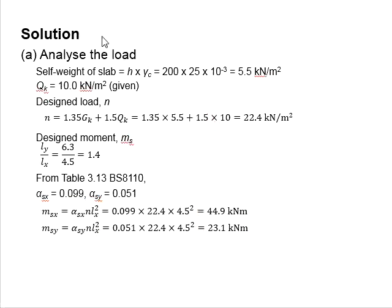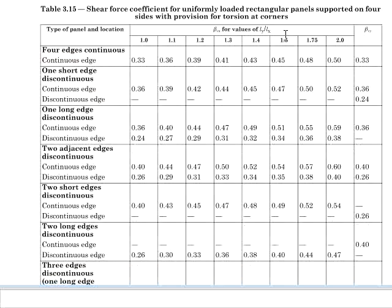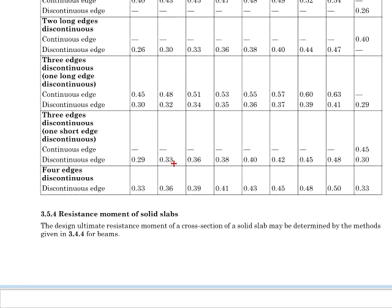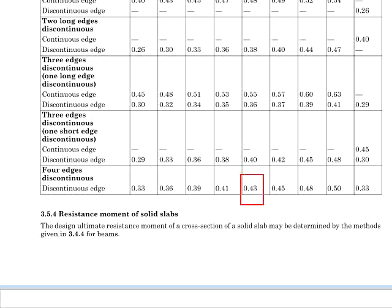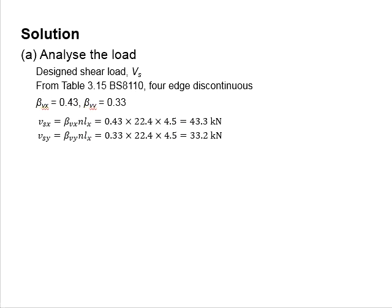Next, calculate the design shear load by referring to Table 3.15. You are looking for beta_vx and beta_vy for the ratio ly/lx of 1.4. Since it is a simply supported slab, it is a four-edge discontinuous member, giving ratios of 0.43 and 0.33. Substituting these coefficients gives shear loads of 43.3 and 33.2 kilonewton for the shorter and longer spans respectively.